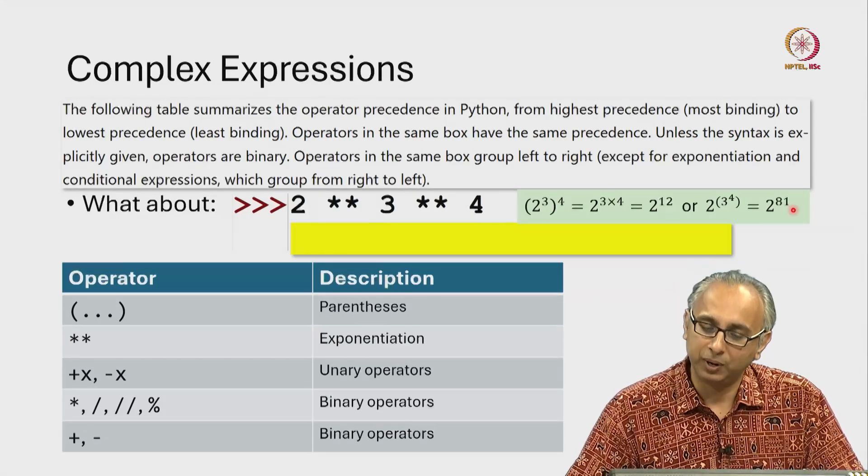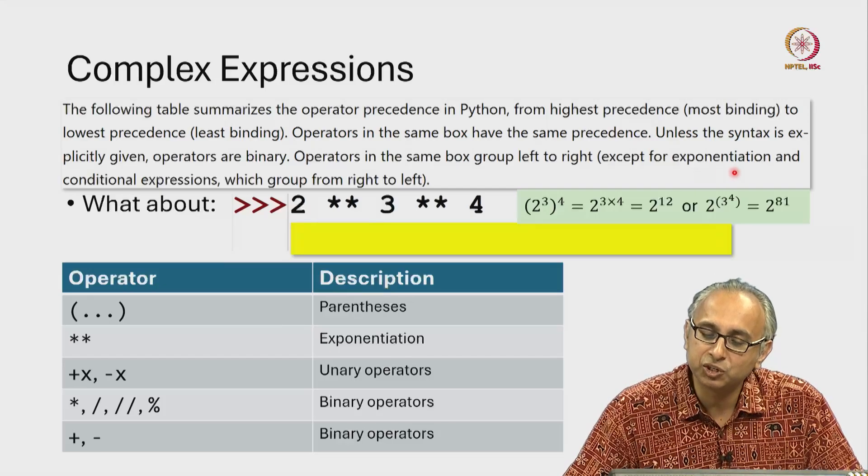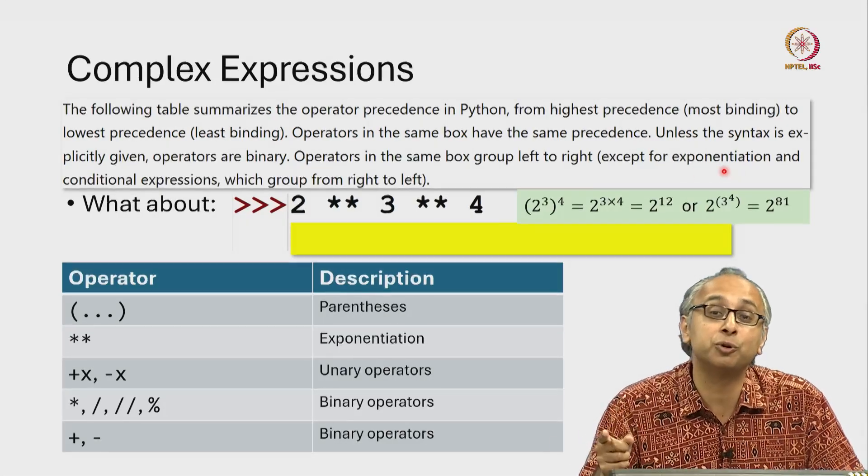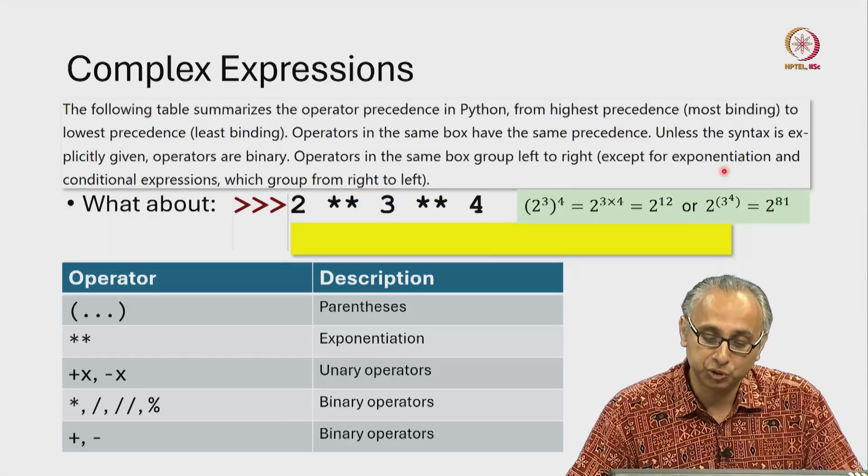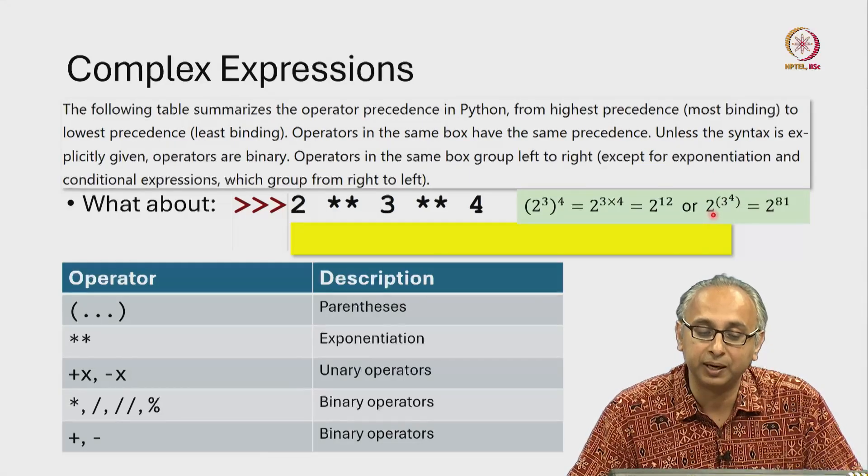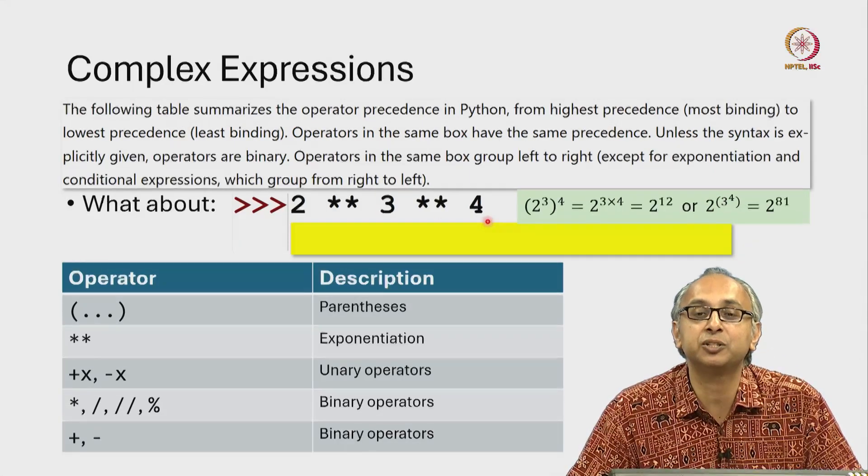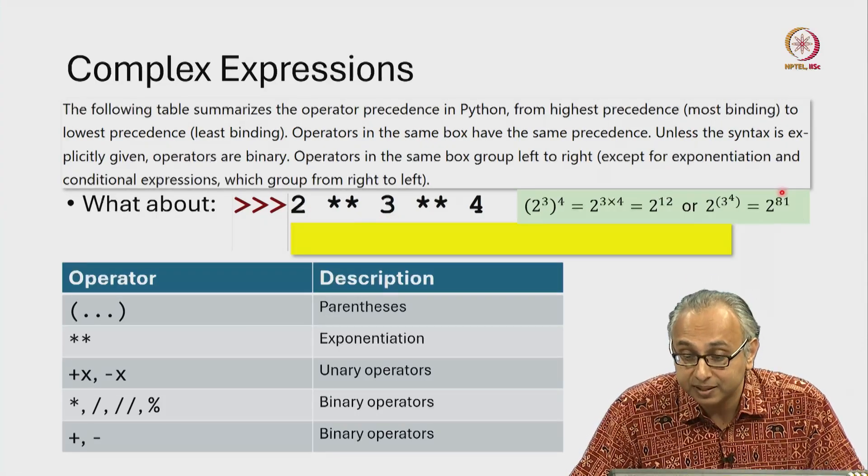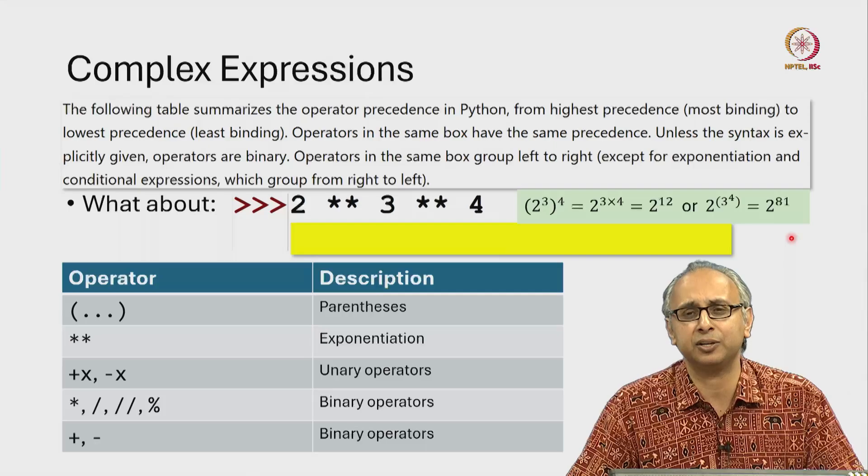Which one is it? Well, we read the documentation and it tells us except for exponentiation which groups right to left. So indeed this grouping where we first calculate 3 to the power 4 and then do 2 to the power that is correct and that means this answer is a very, very large number.